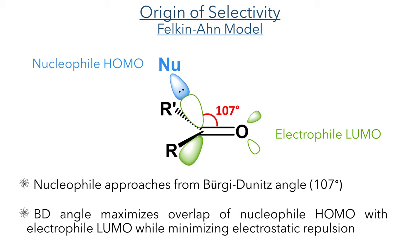To explain this selectivity we can use the Felkin-Anh model of nucleophilic addition to carbonyl centres. For this reaction to occur, the nucleophile must approach the electrophile from the Bürgi-Dunitz angle of 107 degrees. This approach maximizes the overlap of the HOMO of the nucleophile and the LUMO of the electrophile while minimizing electrostatic repulsion. If this kind of analysis is new to you, watch the video on Baldwin's rules where I explain this model in detail.